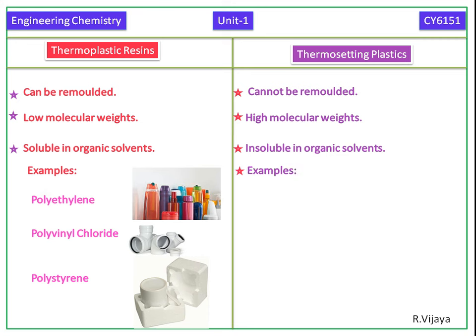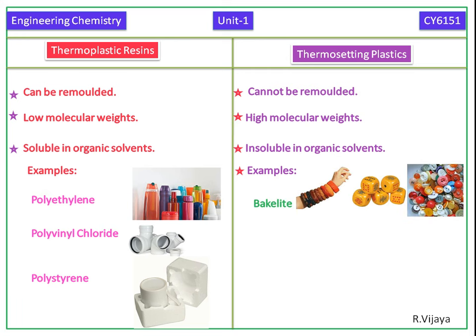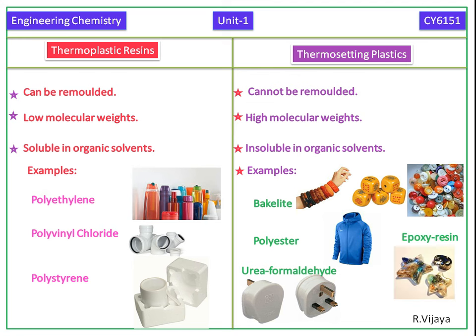Examples of thermosetting plastics are bakelite, polyester, urea formaldehyde and epoxy resin.